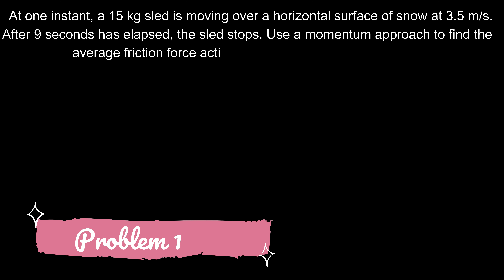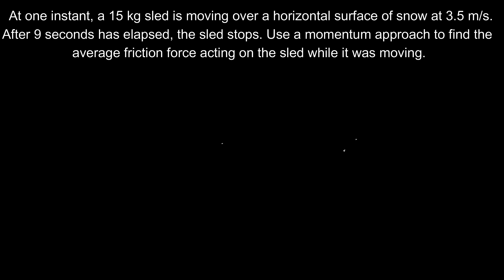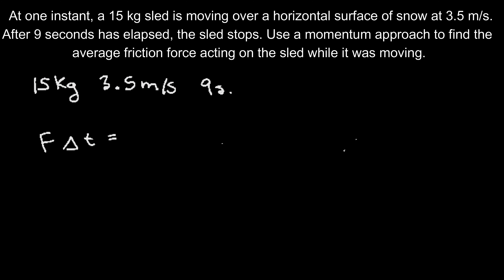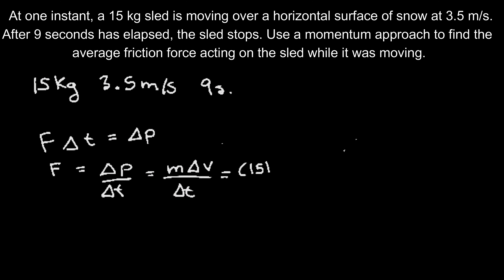Problem number one: A 15 kg sled is moving over a horizontal surface of snow at 3.5 m/s. After 9 seconds, the sled stops. Use a momentum approach to find the average friction force acting on the sled. Since impulse equals force times change in time and also equals the change in momentum, we rearrange to get force equals change in momentum over change in time. The change in momentum is 15 kg × 3.5 m/s, and the time is 9 seconds, giving an average friction force of 5.83 N.